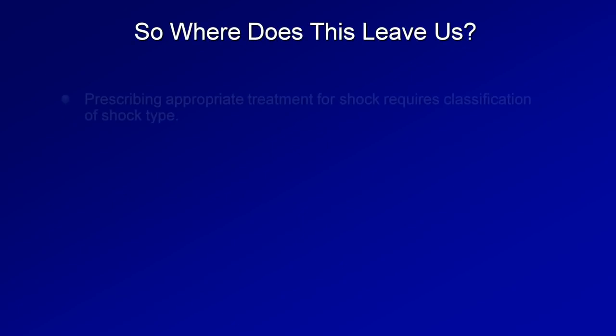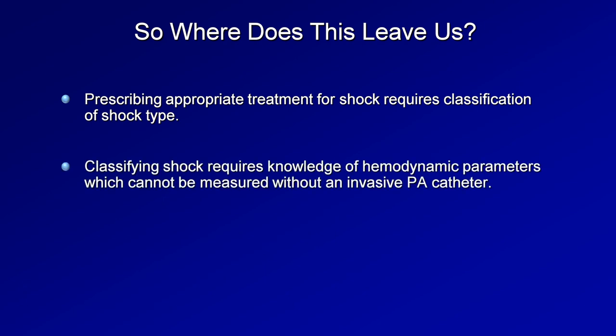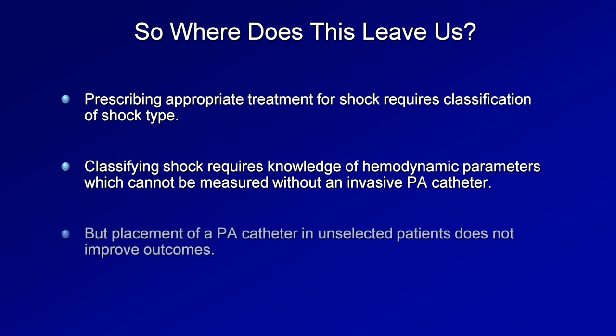So where does this leave us? Prescribing appropriate treatment for shock requires accurate classification of shock type, which requires knowledge of hemodynamic parameters that cannot be measured without an invasive PA catheter — yet placement in unselected patients does not improve outcomes. We can be much more selective about who receives PA catheters, and we need to find non-invasive ways of classifying shock that are more reliable than reducing complex pathophysiology to just three numbers.